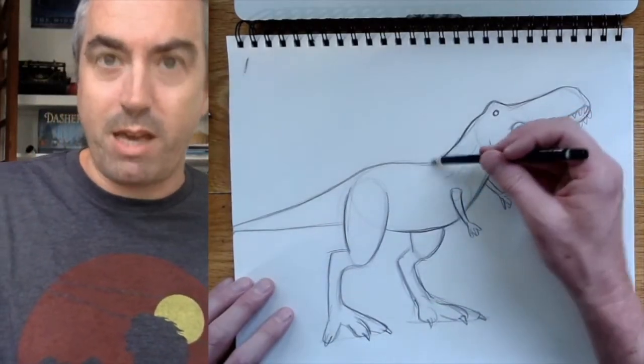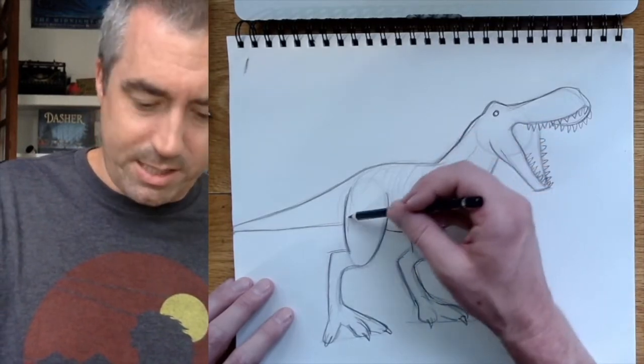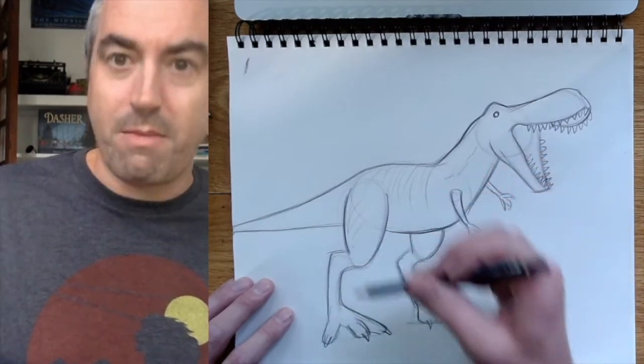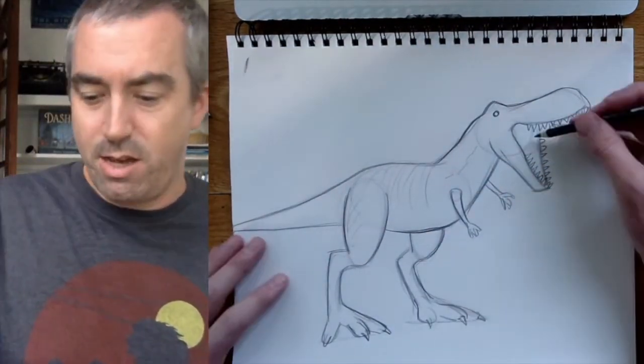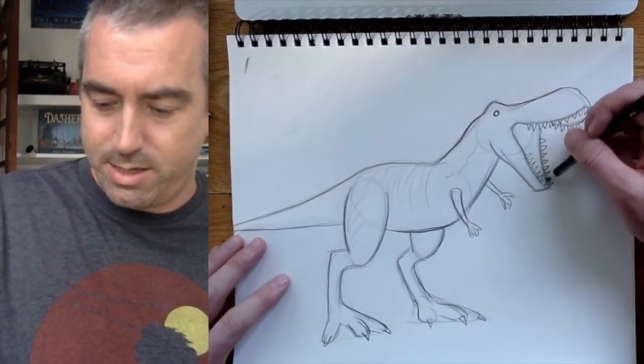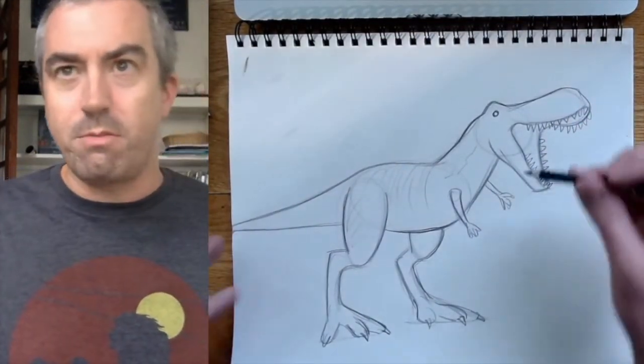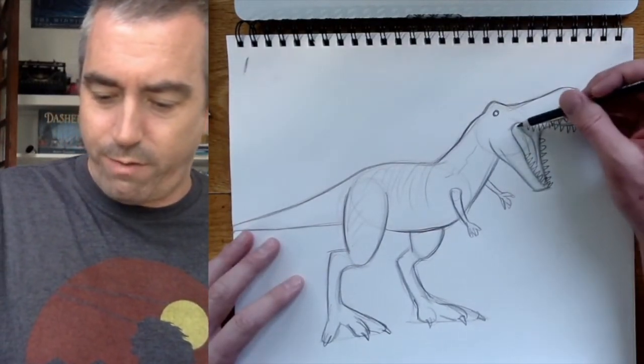Now you can add details. You can make all the scales on the T-Rex's skin. You can color it in if you want. Maybe even think of a background. Maybe imagine where this T-Rex is, what he's roaring at, or maybe there's like volcanoes in the background, or maybe he's just walking through a field. Who knows? Give him like an eyeball there.